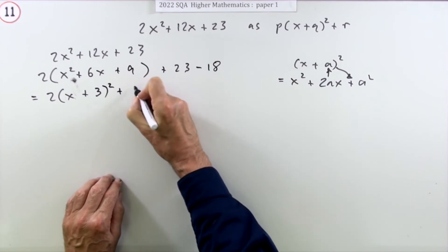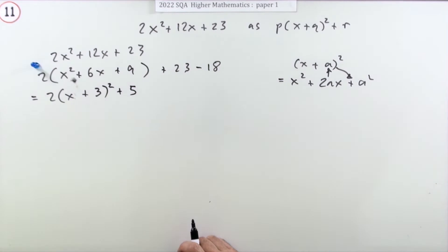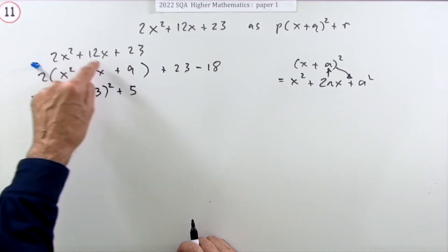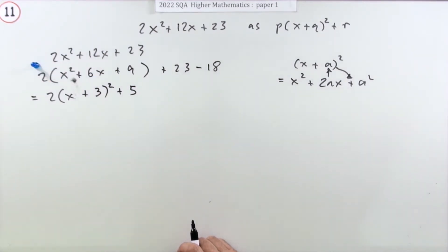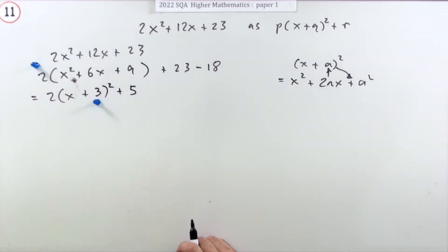23 minus 18 makes plus five. Doing it that way, the marks would be identifying that factor, taking that two out from these first two terms would be one mark, getting the three and then finishing off the constant for the third mark.